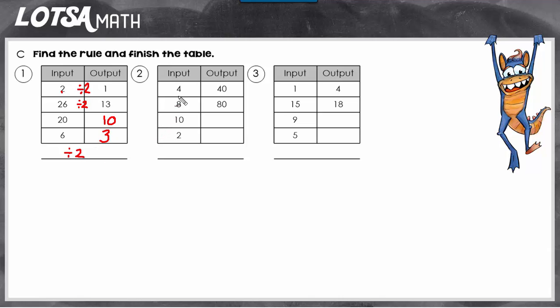Let's look at number 2. On number 2, we see that the outputs are getting bigger. So it's going to be addition or multiplication.